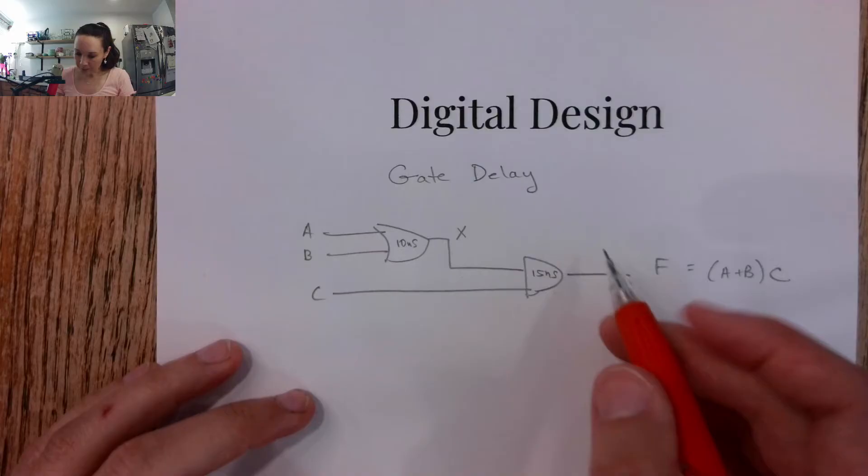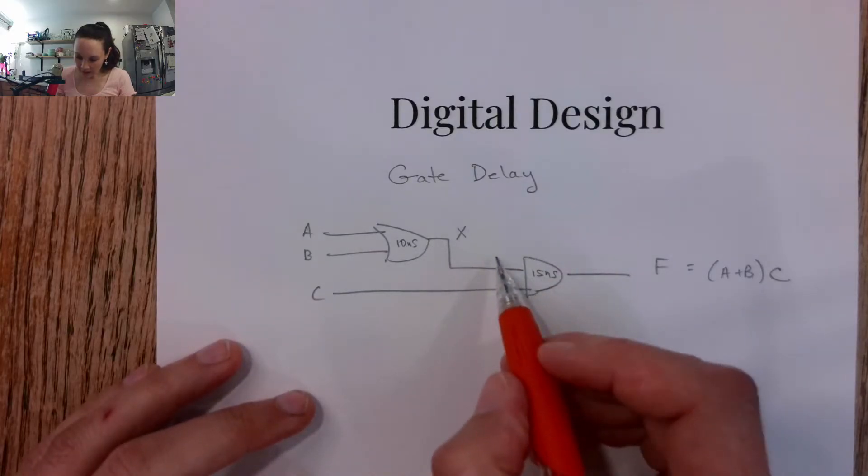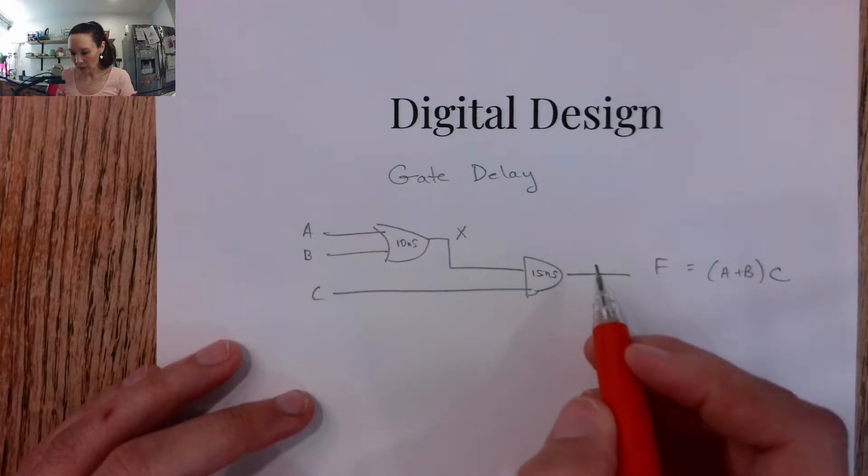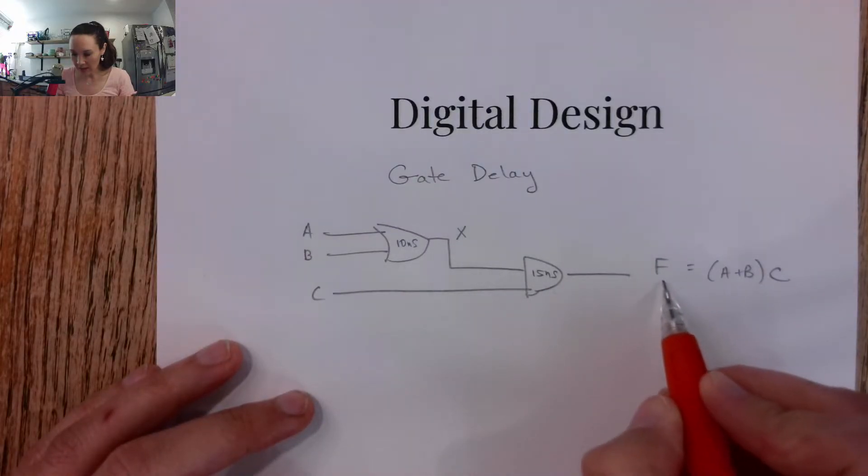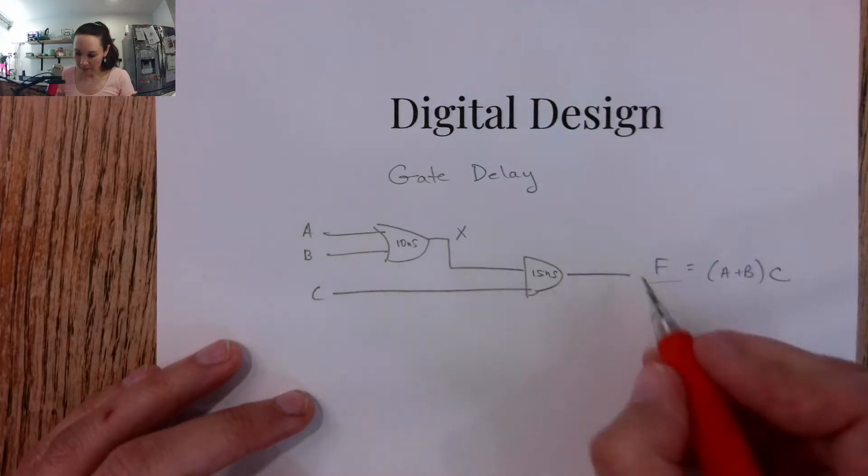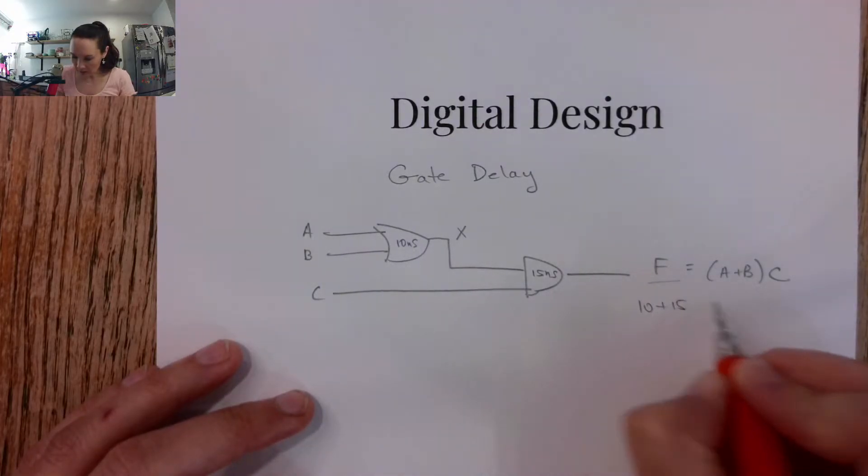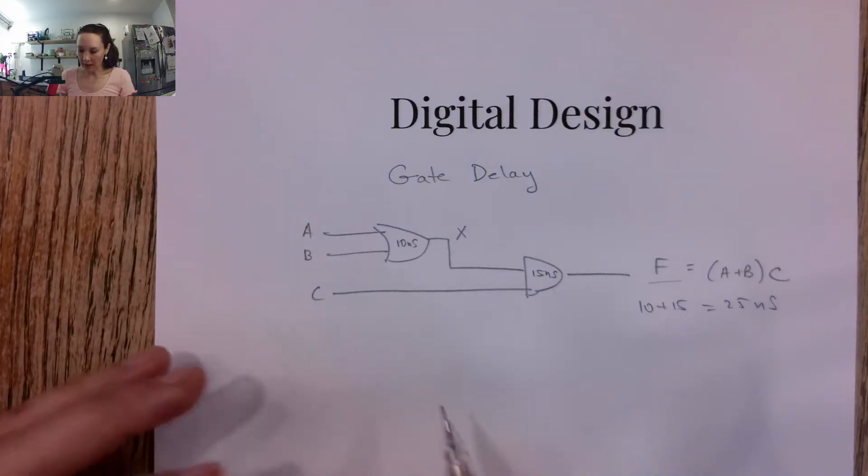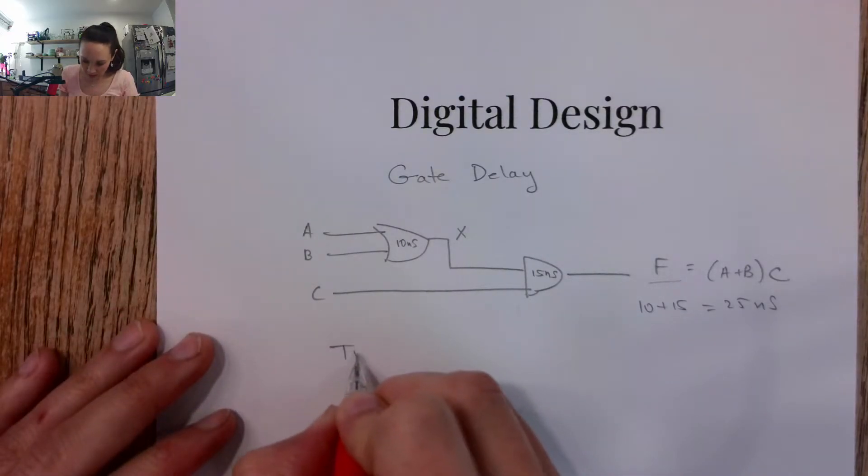So if after 10 seconds this guy comes through, and then after 15 seconds this AND operation is complete, then that means F is not actually valid for 10 plus 15, 25 nanoseconds. So this is the idea of gate delay, and we can put this on a timing diagram.